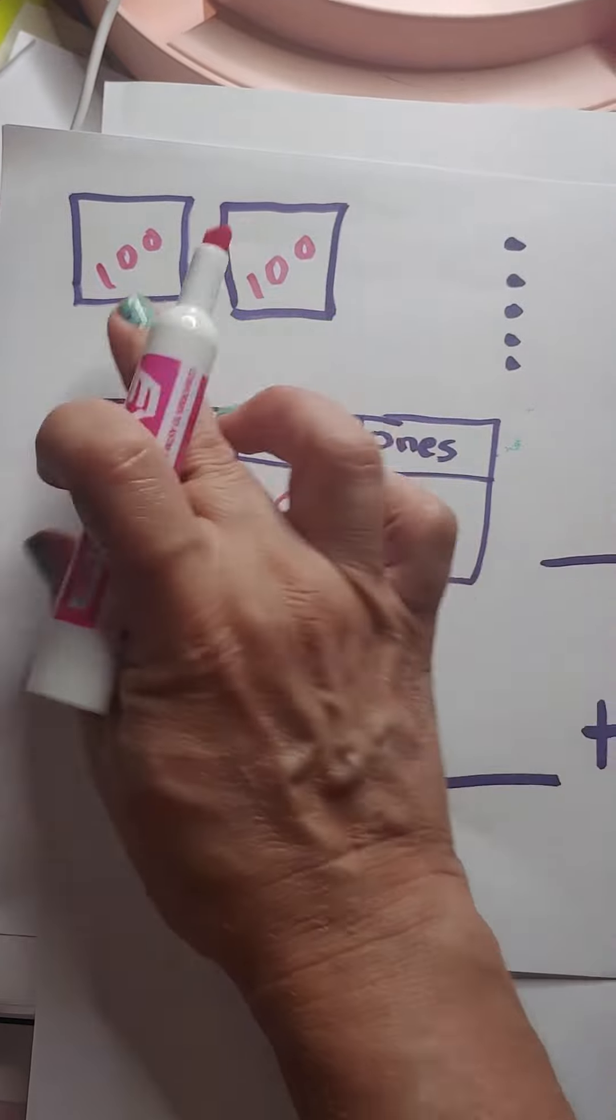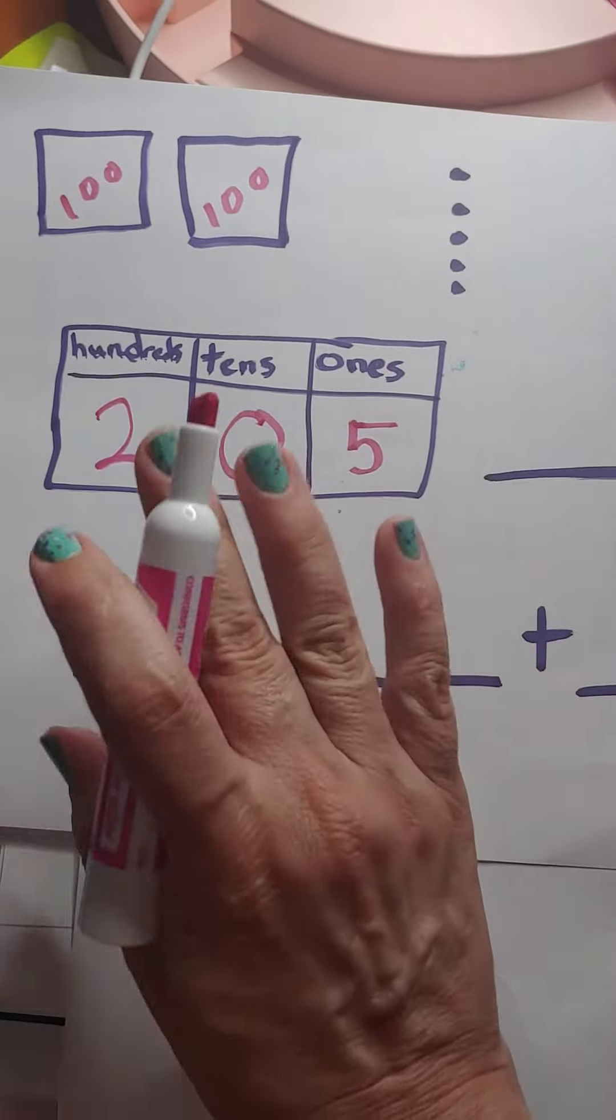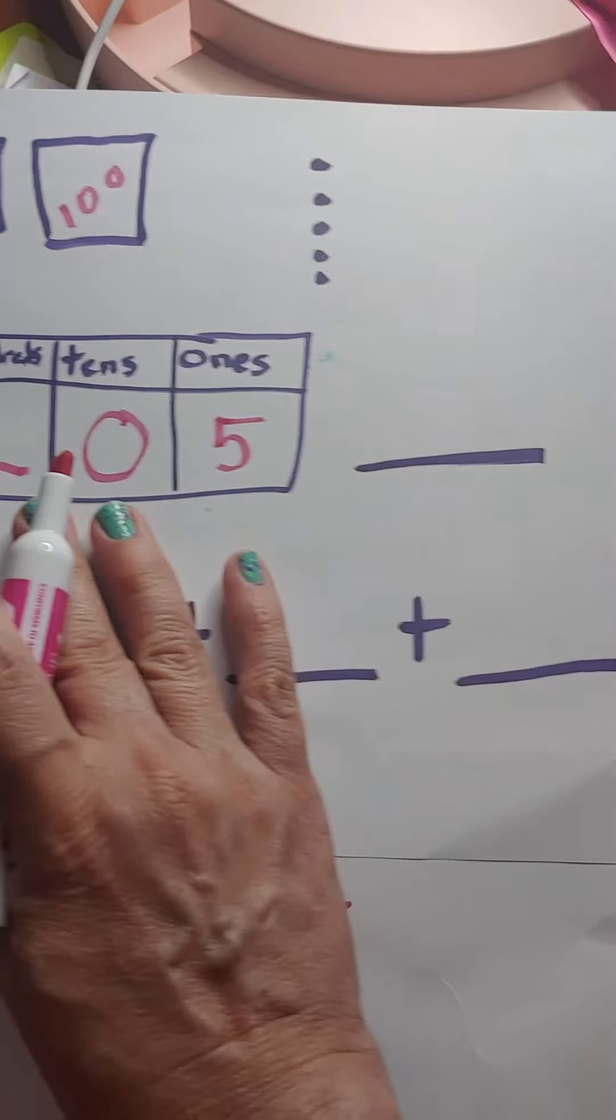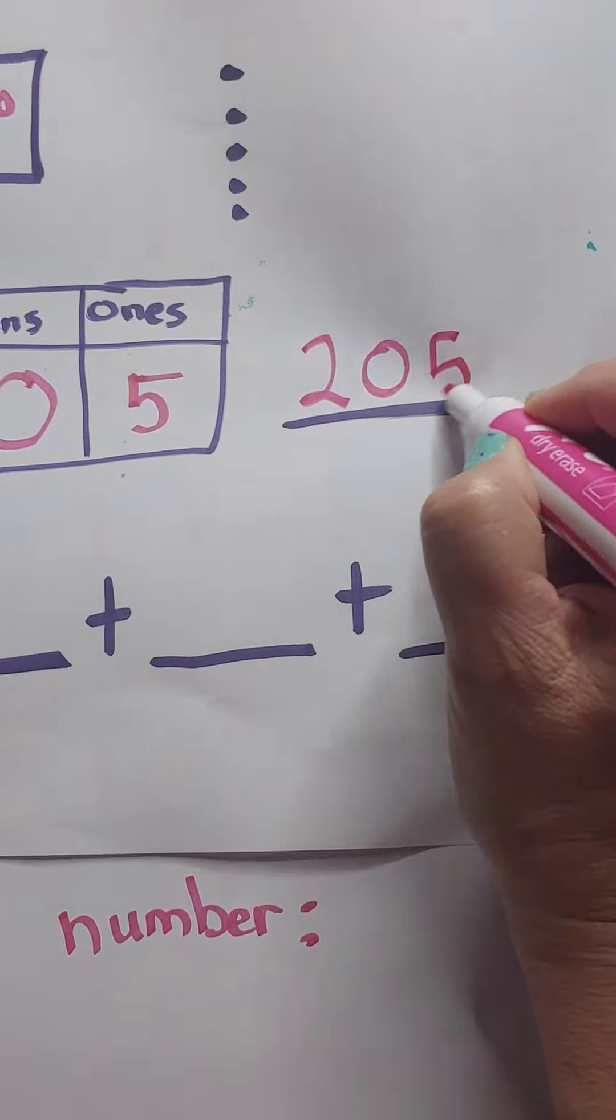How many hundreds? One hundred, two hundred. There are two. So you're going to put two there. And magic, there's your number. And I'm going to write it here again. Two hundred five.